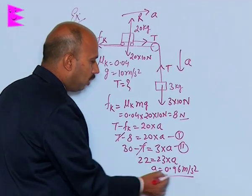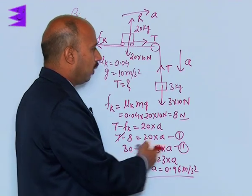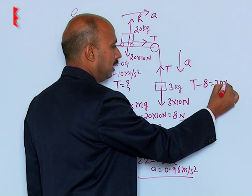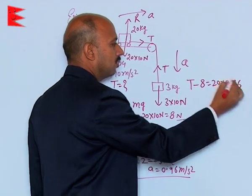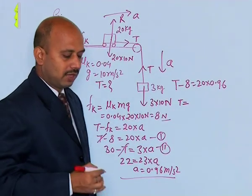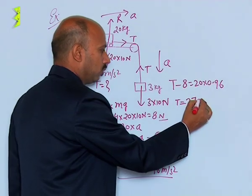Now put the value of a in any one of the equation. You can take the equation 1. If you are putting in equation 1, you will be getting T minus 8 is equal to 20 into 0.96 and then you will be getting T is equal to here, in this case, 27.2 Newton.